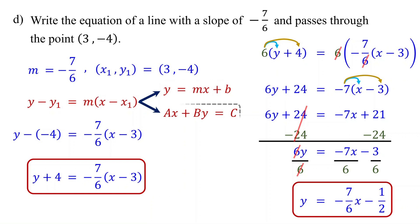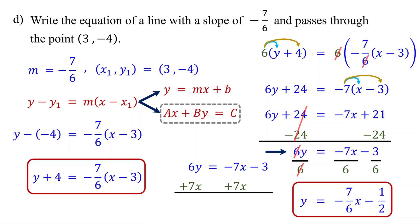To write it in standard form, start from the step before dividing by 6. Move the x term to the left side by adding 7x to both sides. On the left, you get 7x plus 6y. On the right, these cancel out, leaving negative 3. This is the equation in standard form.